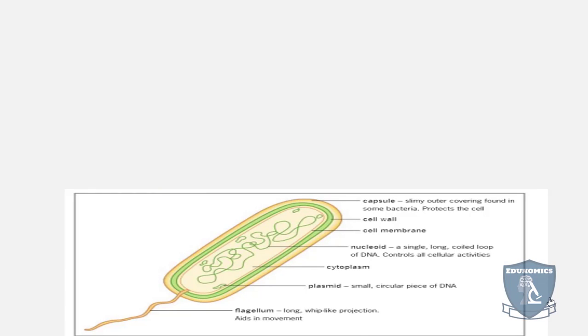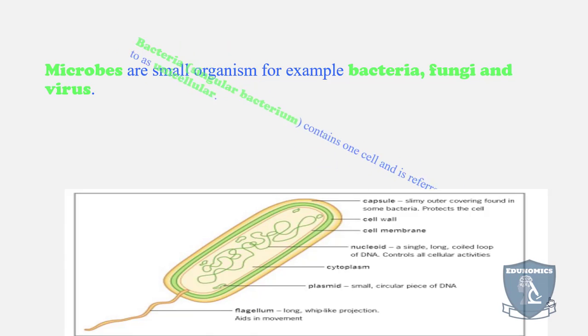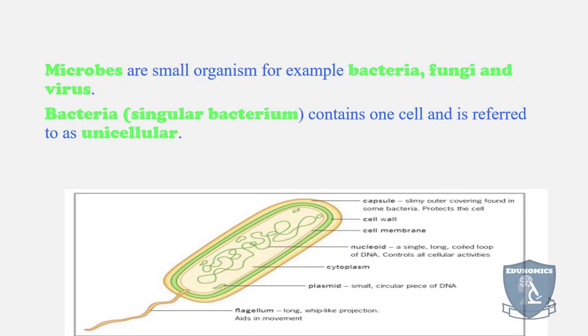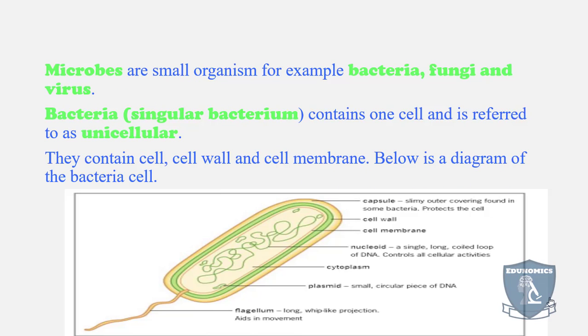We're going to look at microbes, which are also a type of cell. Microbes are small organisms; examples include bacteria, fungi, and viruses. Bacteria are single-cell or unicellular organisms, meaning they are just one single cell. They have cell walls and cell membranes as shown in the diagram. You can pause the video and take a look at the various structures within the bacteria or microbe.